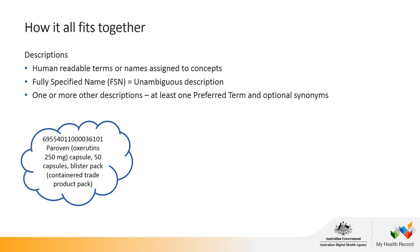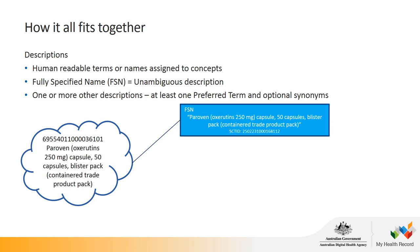Descriptions are the human-readable names assigned to each concept. The first description is the fully specified name, or FSN, which is the unambiguous description of a concept. It generally includes all the information about the attributes of a particular concept. At the end of the term you can see a word in brackets called a semantic tag, which tells us where the concept lives within the SNOMED CT hierarchy — in this case, it is a CTPP. Importantly, it also contains the active ingredient, which is oxyrутins — the international non-proprietary name, or INN, for this substance.